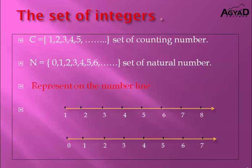There is another bigger set called natural numbers, which begins from 0, 1, 2, 3, 4, and so on. The two sets — counting numbers and natural numbers — are both positive sets.